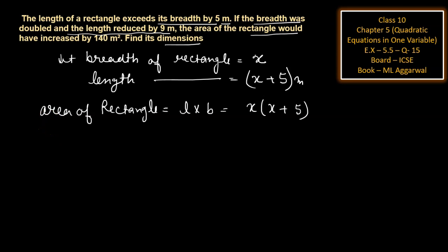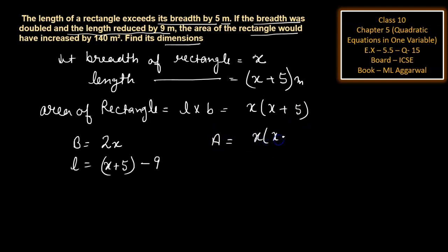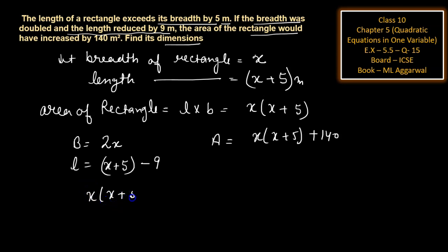It is given that if the breadth is doubled, the new breadth is 2x. Then the length is reduced by 9, so the new length is x plus 5 minus 9. The area would have increased by 140, so the new area is x(x+5) plus 140.